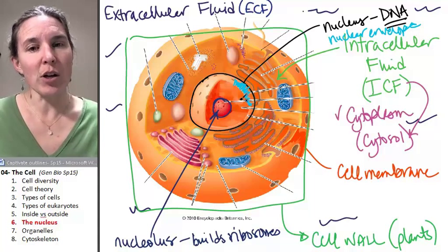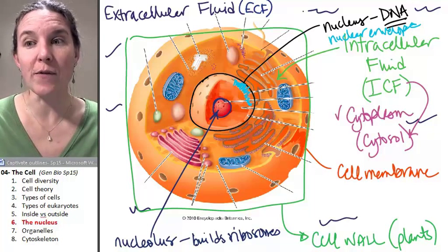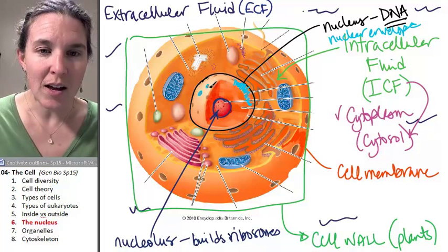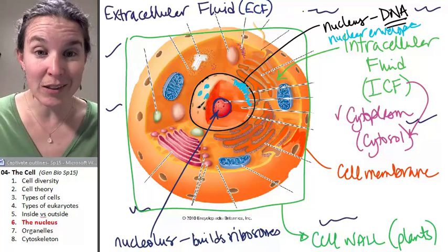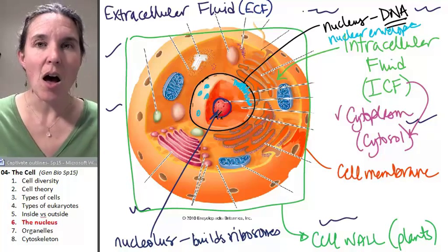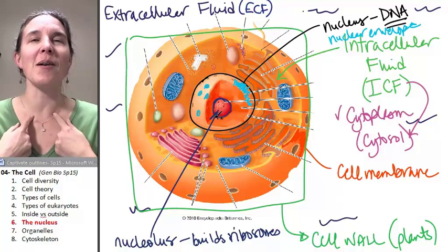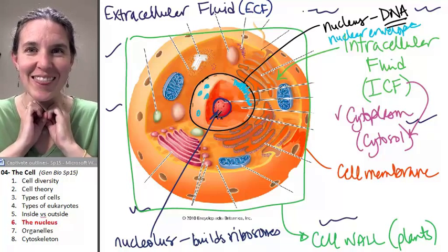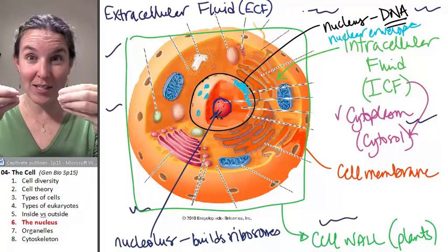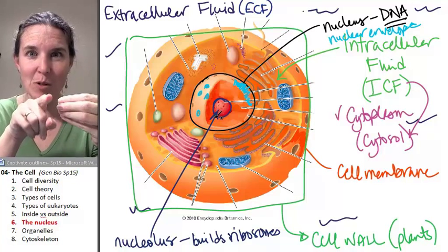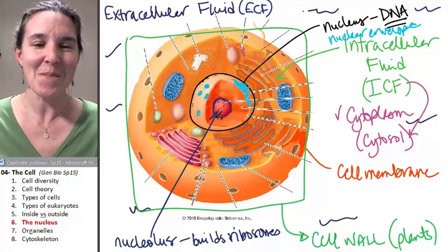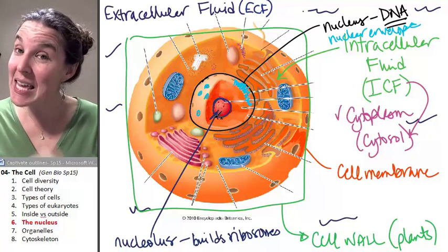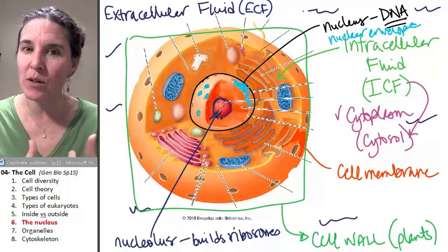The nuclear envelope, notice, if you will, notice the holes. Those are pores. Those, I mean, they're literally holes. They're like those little grommet things in a hoodie, the little metal things that hold two pieces of fabric together, but make like a tunnel in between. That's what those things are like. And they're holes that allow some stuff in and out of the nucleus.